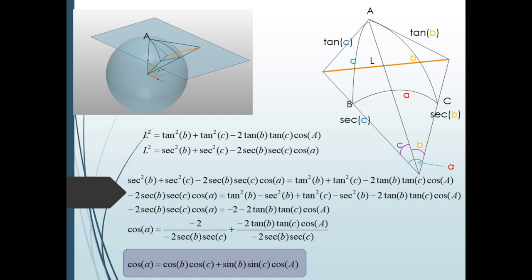Setting these equal, we can subtract secant squared from both sides. Recall that tan²θ − sec²θ = −1. So we have −2 sec b sec c cos a = −2 − 2 tan b tan c cos A. Now divide everything by −2 sec b sec c, change everything to sine and cosine, and simplify. We're left with: cos a = cos b cos c + sin b sin c cos A.